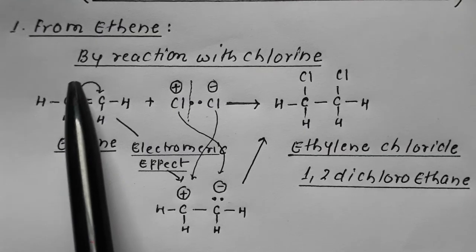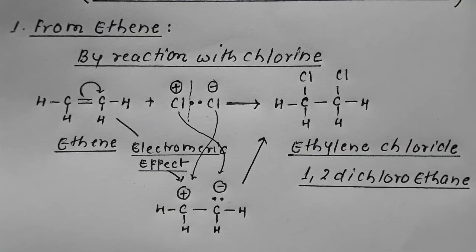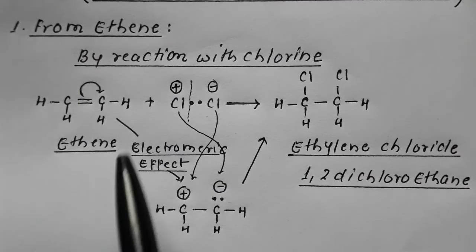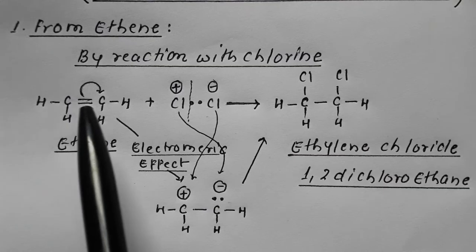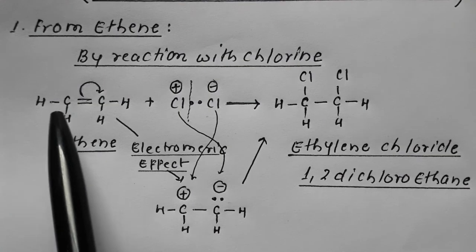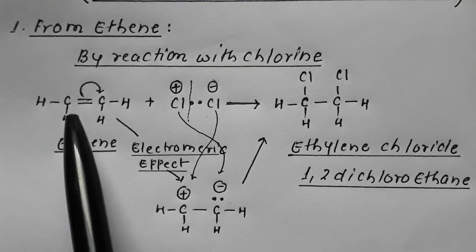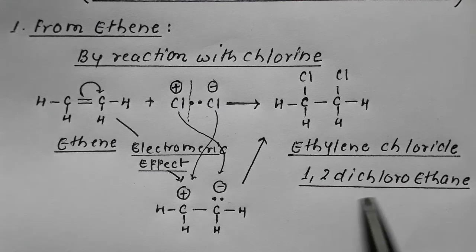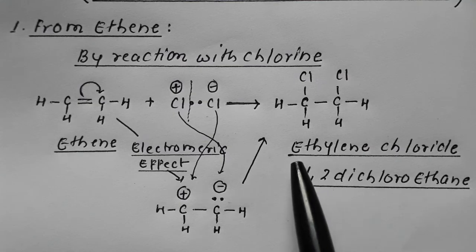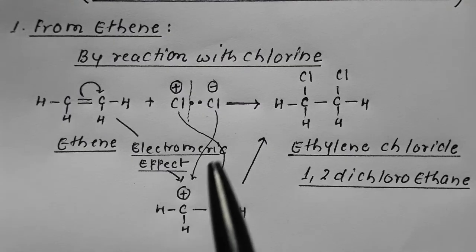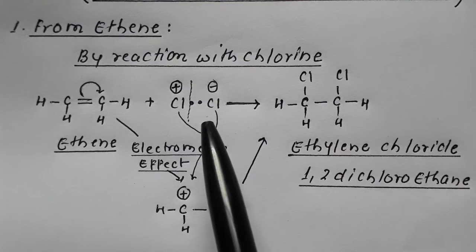The first method to prepare ethylene chloride is from ethene by reaction with chlorine. When ethene is made to react with chlorine, one chlorine attaches to carbon number one and the other chlorine attaches to carbon number two, resulting in formation of 1,2-dichloroethane — that is ethylene chloride.